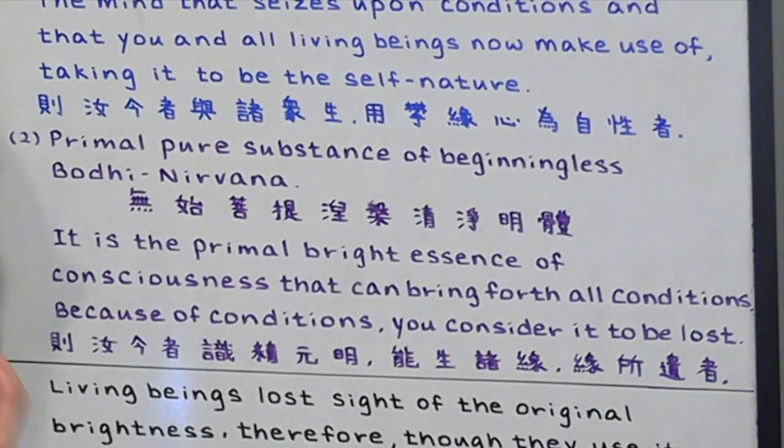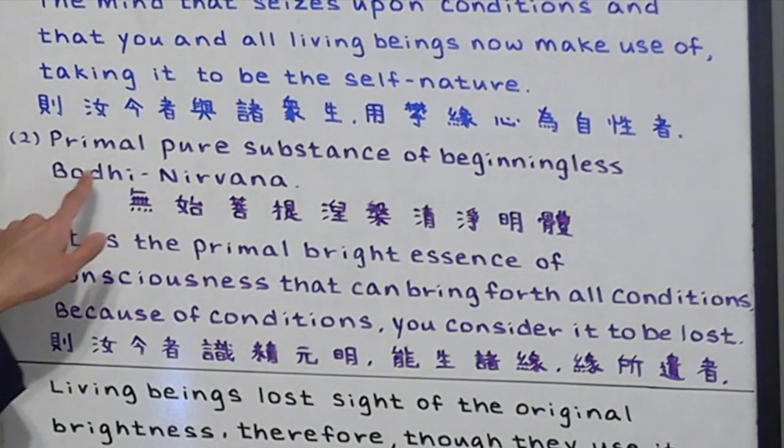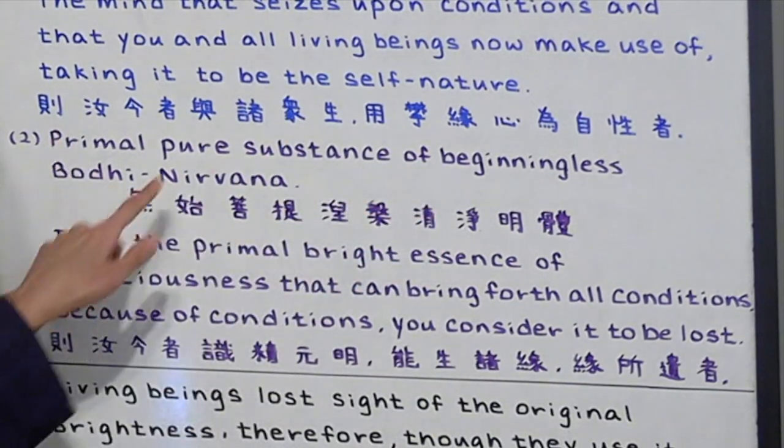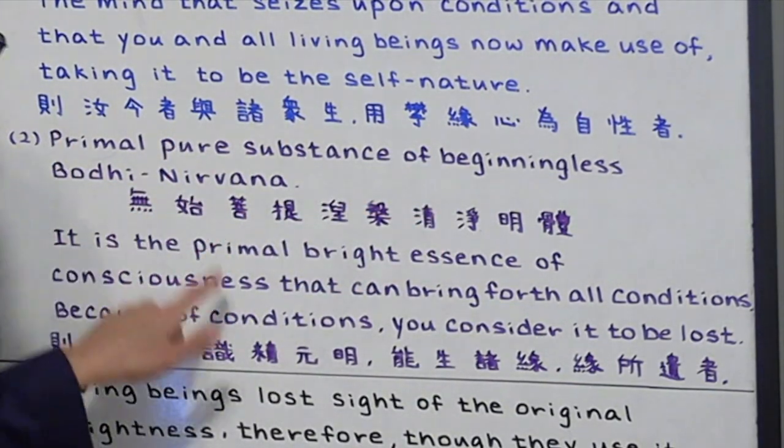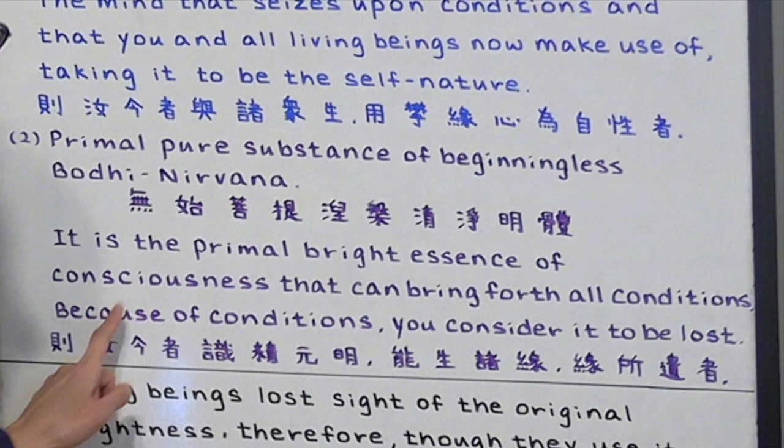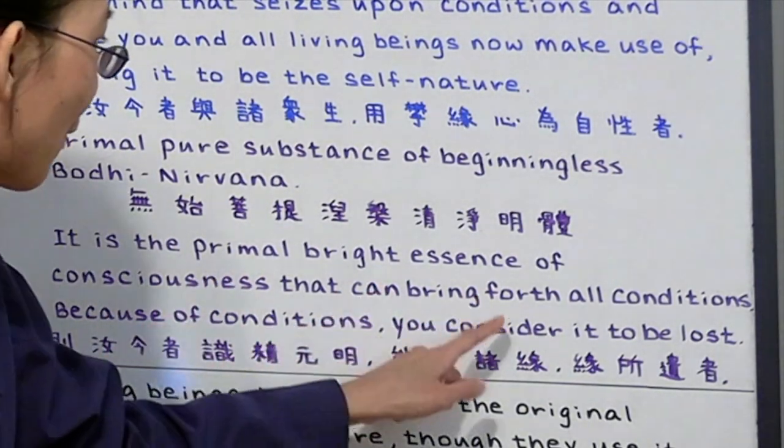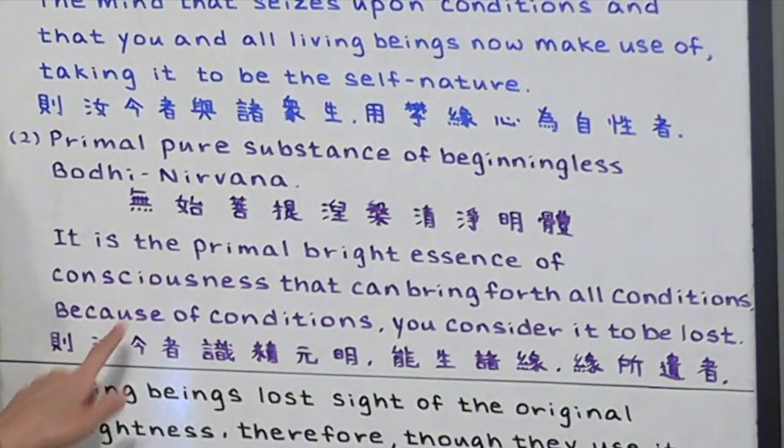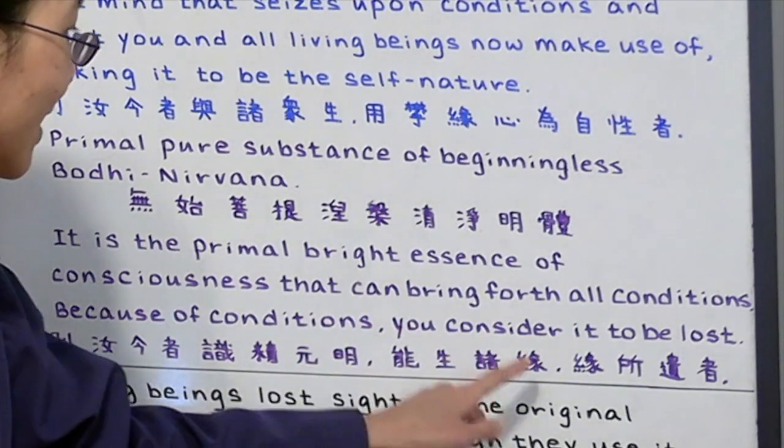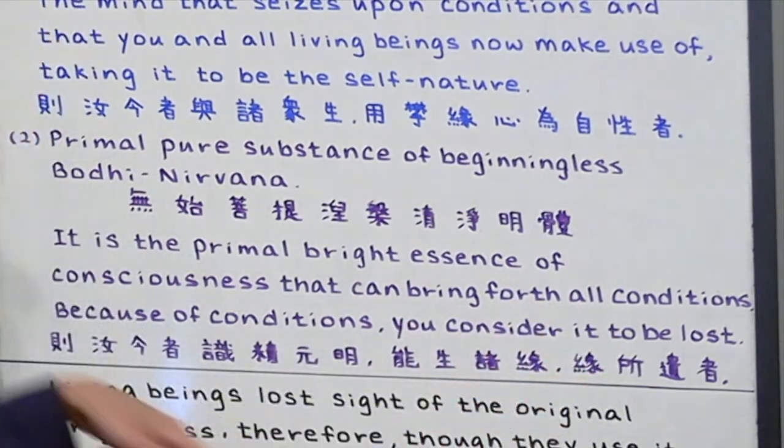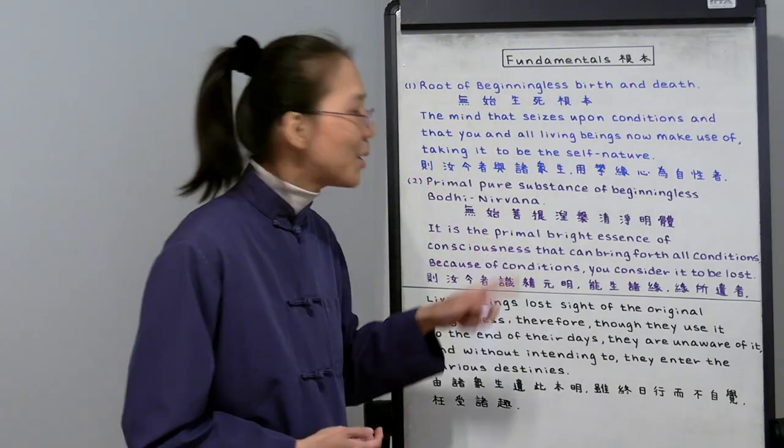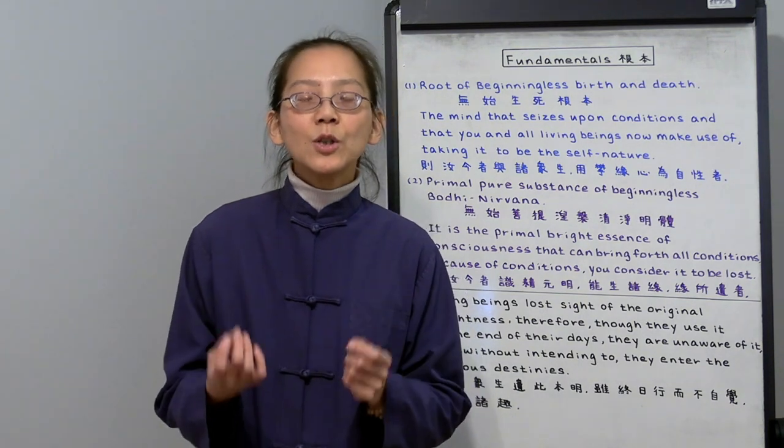Now let's look at our pure mind. The primal pure substance of beginningless Bodhi Nirvana. It is the primal bright essence of consciousness that can bring forth all conditions. Because of conditions, you consider it to be lost. This pure mind is called primal because it is originally there.